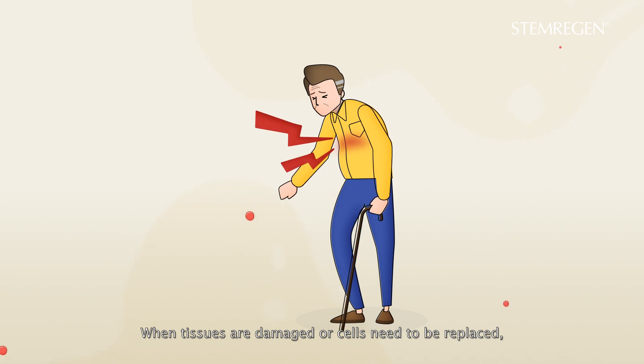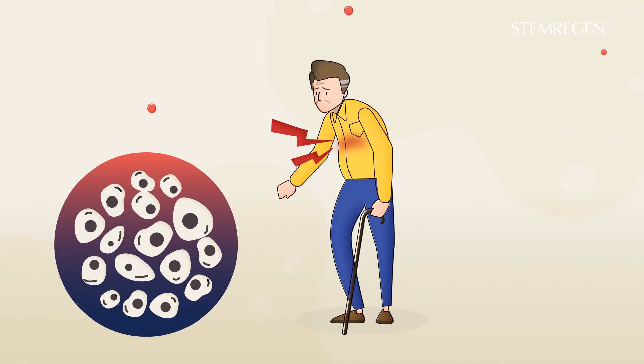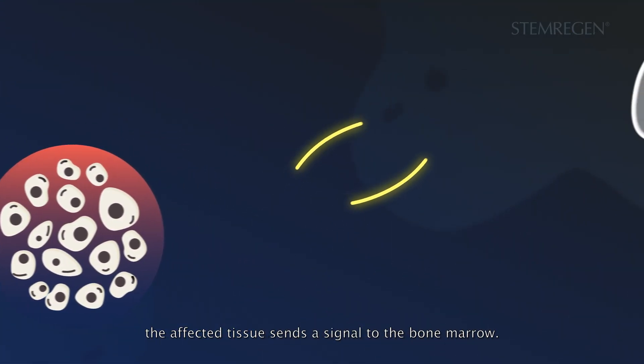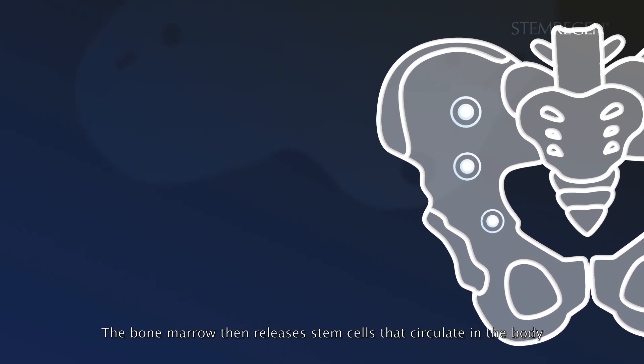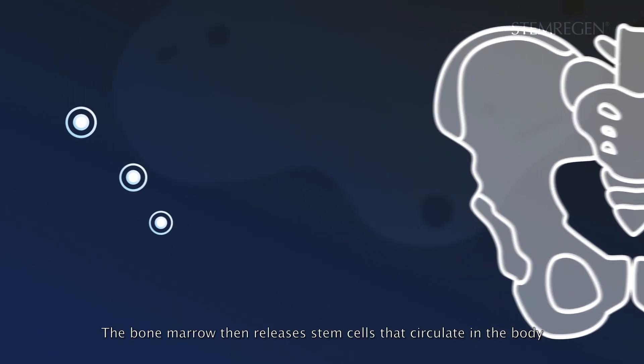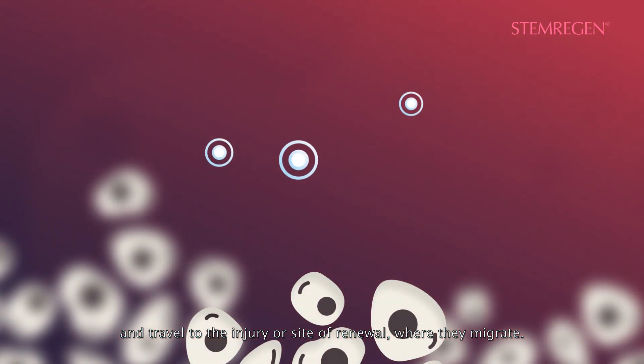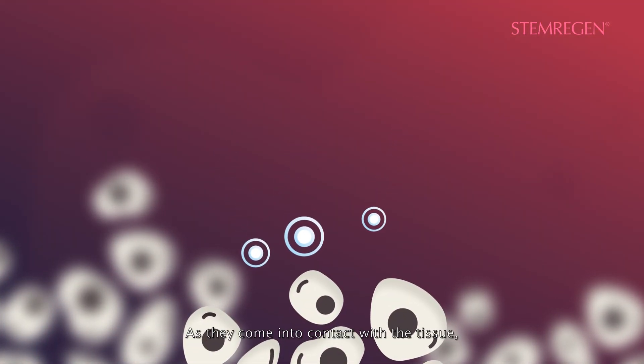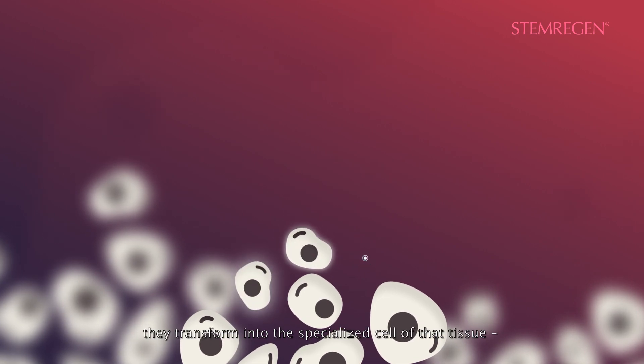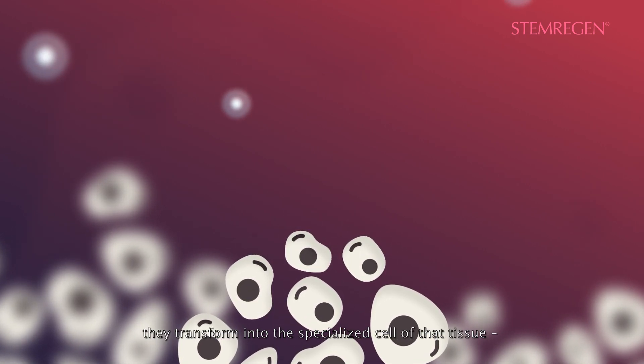When tissues are damaged or cells need to be replaced, the affected tissue sends a signal to the bone marrow. The bone marrow then releases stem cells that circulate in the body and travel to the injury or site of renewal where they migrate. As they come into contact with the tissue, they transform into specialized cells of that tissue.